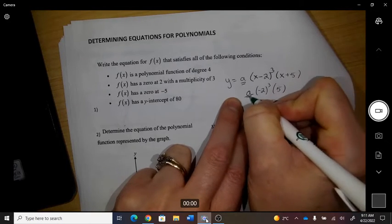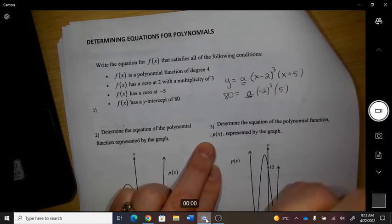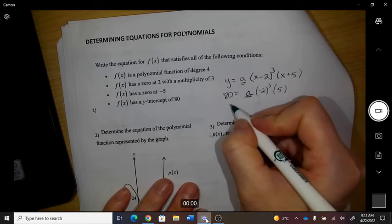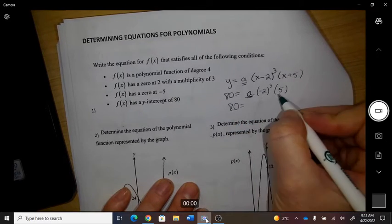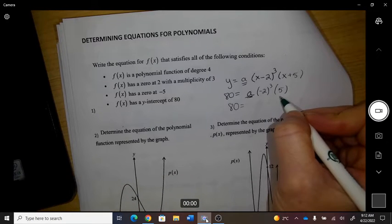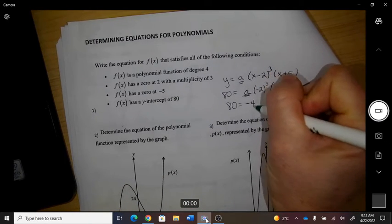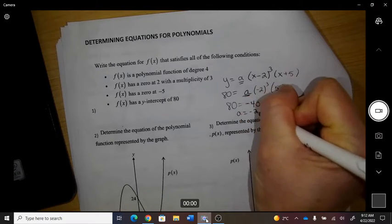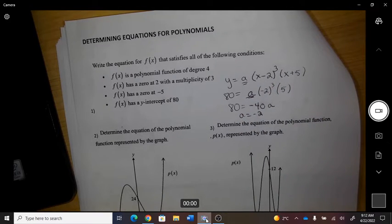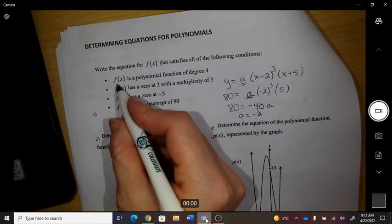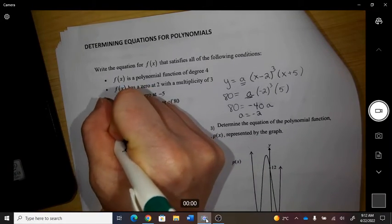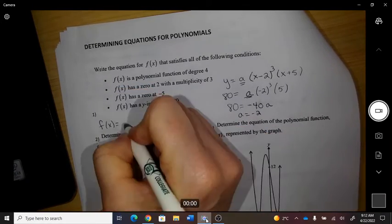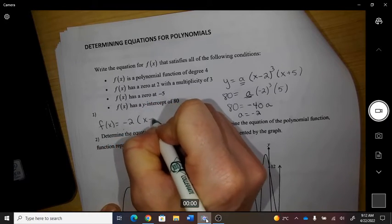What would I have to multiply to get up to an 80? So this is negative 8 times 5, so negative 40. Therefore a equals negative 2. So now my final equation, because it's called f of x, I better use the same language, and then negative 2, and then I can do my factors.